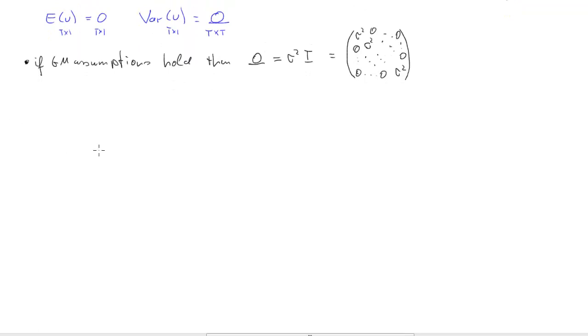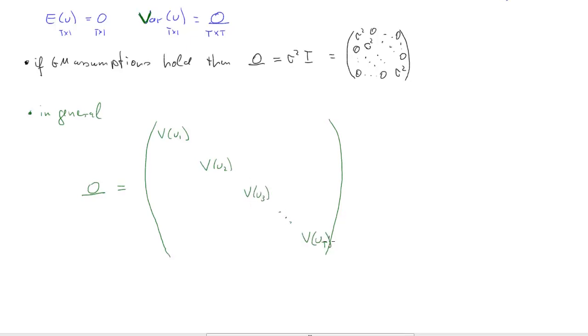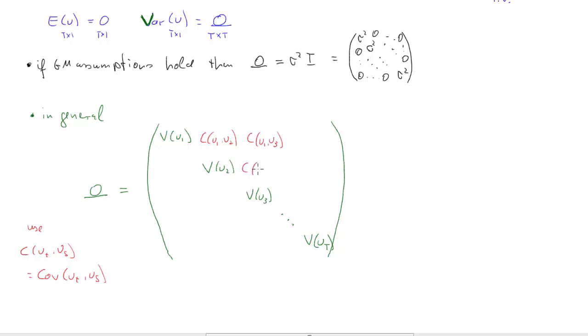In general, however, that omega will look somewhat differently. Not making that assumption that the Gauss-Markov assumption holds, our omega will have, let's start with the diagonal, the V stands for variance, the variance of u1, variance of u2, variance of u3, all the way up to variance of ut. And here on the off-diagonal, we have the covariance of u1 and u2, covariance of u1 and u3. So c of ut, us in general, means the covariance between ut and us.